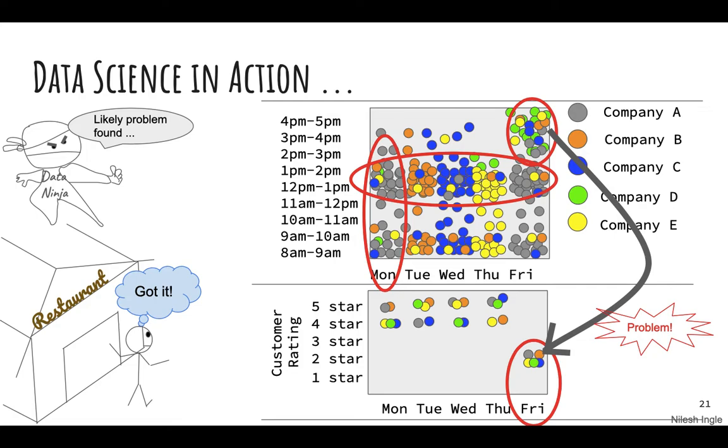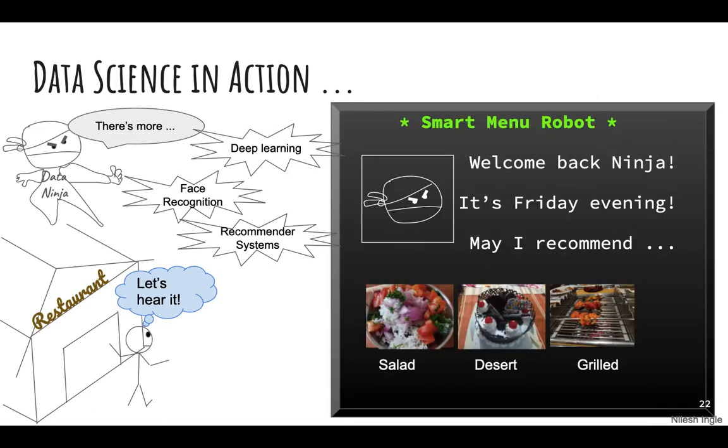So we have found the problem there. Now we could go ahead and suggest additional measures to the business owner, the restaurant owner. How about a smart menu robot system that could be created using deep learning methodologies, for example face recognition or recommender systems, where if a customer comes in the system recognizes the customer, wishes them welcome to the restaurant, and the system would also have data about their prior visits, what they had ordered, when they had visited the restaurant. Based on that the AI system could suggest options on the menu such as salad, dessert, or grilled dishes.